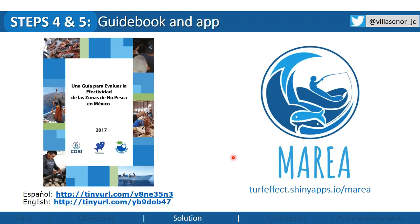To make all this information available, we first developed a guidebook. The guidebook runs the user through the very first steps: identifying the objectives of your reserve, matching those with indicators to measure effectiveness, and how to collect data — pointing users to more specific resources. We also provide formatting guidelines, because if you're going to use Marea — an app — you need your data properly formatted. We have examples on how to run the evaluation. This guidebook is available in Spanish and English, with a tiny URL provided.